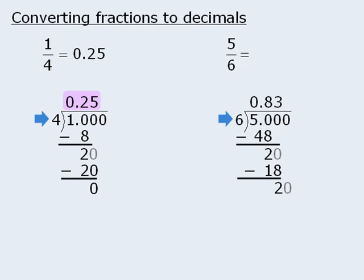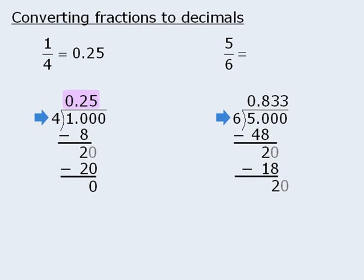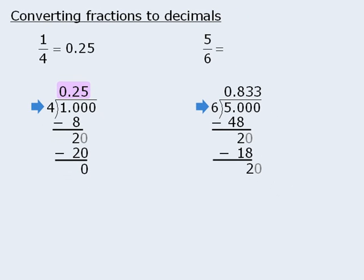If we continue along and drop a 0 down, 6 divides into 20 three times. 3 times 6 is 18 again, and subtracting 18 from 20 gives 2 again. This pattern will continue forever, so the decimal equivalent of 5 sixths is 0.83333..., where the 3s continue forever.